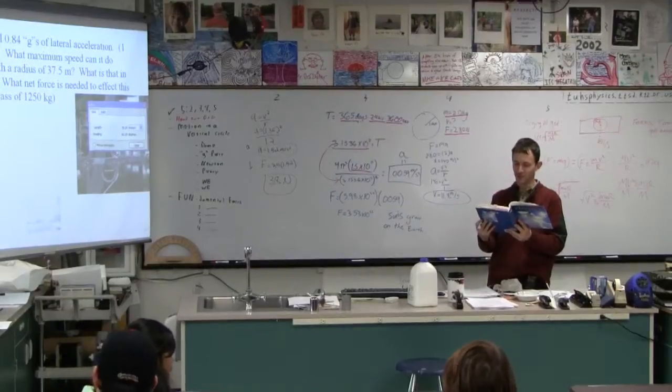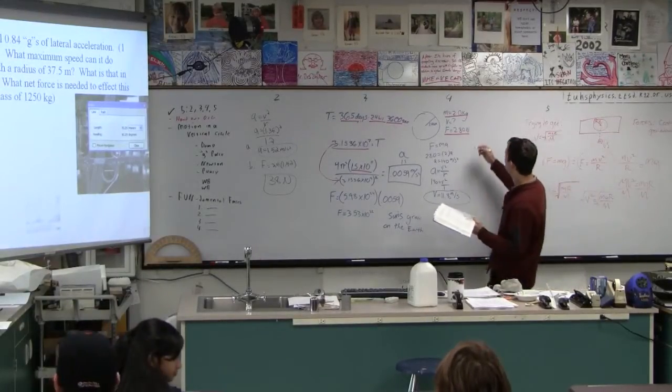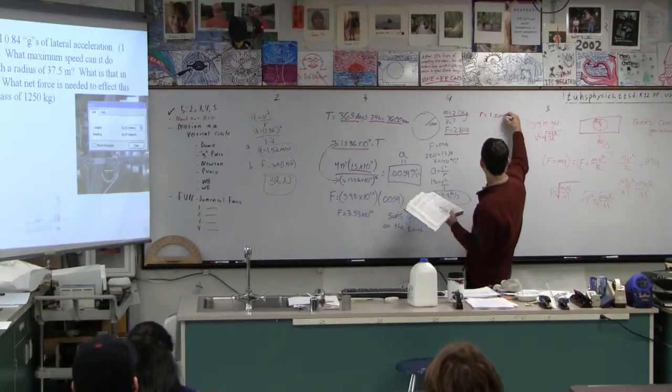As it's rotated in a uniform circle of radius one meter, calculate the speed of the discus. So we've got the force, we've got the mass, we've got the radius is one meter.